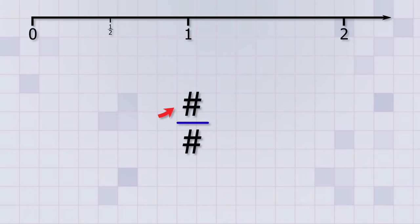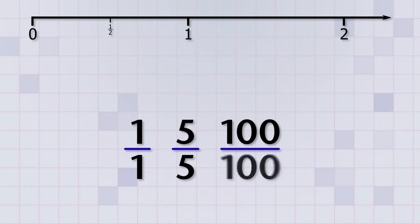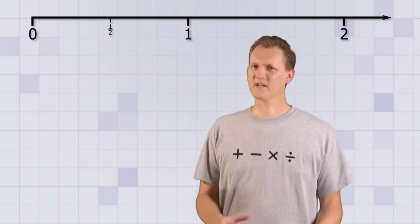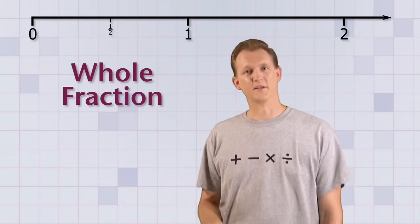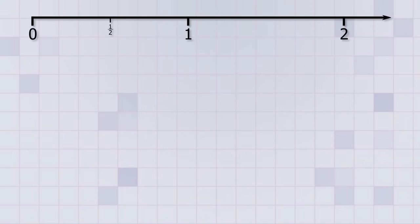Our third rule is this: if the top number and bottom number are the same, then the value of the fraction is always just 1. So whether you have 1 over 1, or 5 over 5, or 100 over 100, the value is always just 1. I'm going to call this kind of fraction a 'whole fraction' because its value represents one whole. And in case you're wondering, this rule doesn't apply to 0 over 0 because having a 0 on the bottom of a fraction is a big no-no.